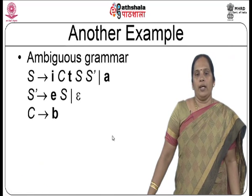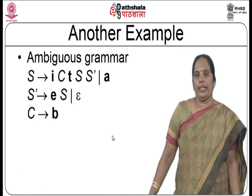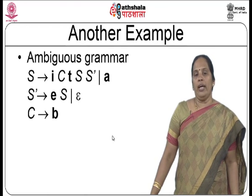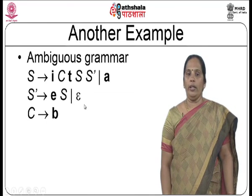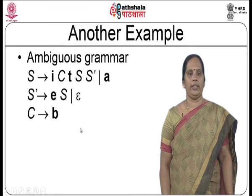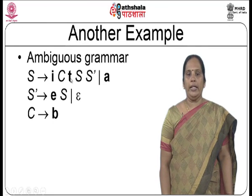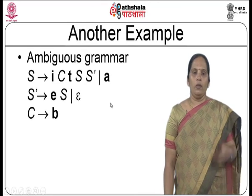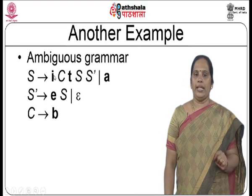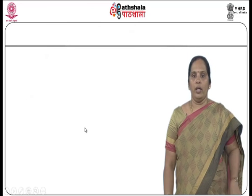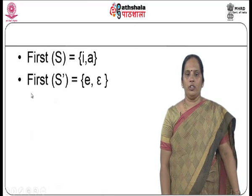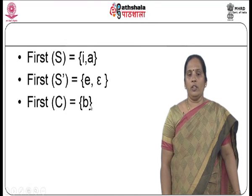Now let us consider the if-then grammar after left factoring: S produces I-C-T-S-dash or A; S-dash produces E-S or epsilon; C produces B. The terminals are I, T, A, E, epsilon, and B; the non-terminals are S, S-dash, and C. Computing first: first of S is {I, A}, first of S-dash is {E, epsilon}, and first of C is {B}.